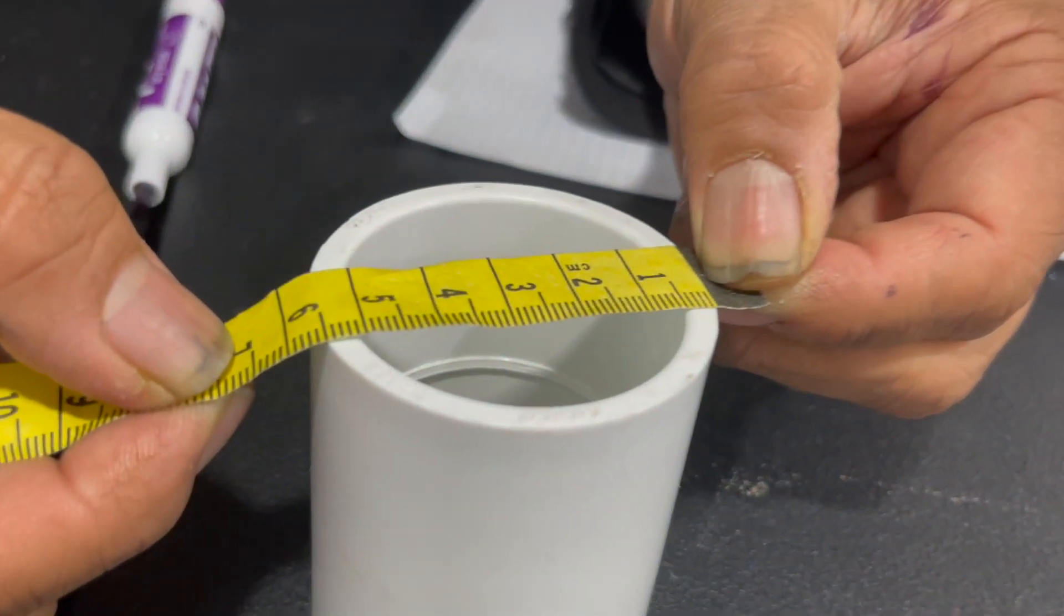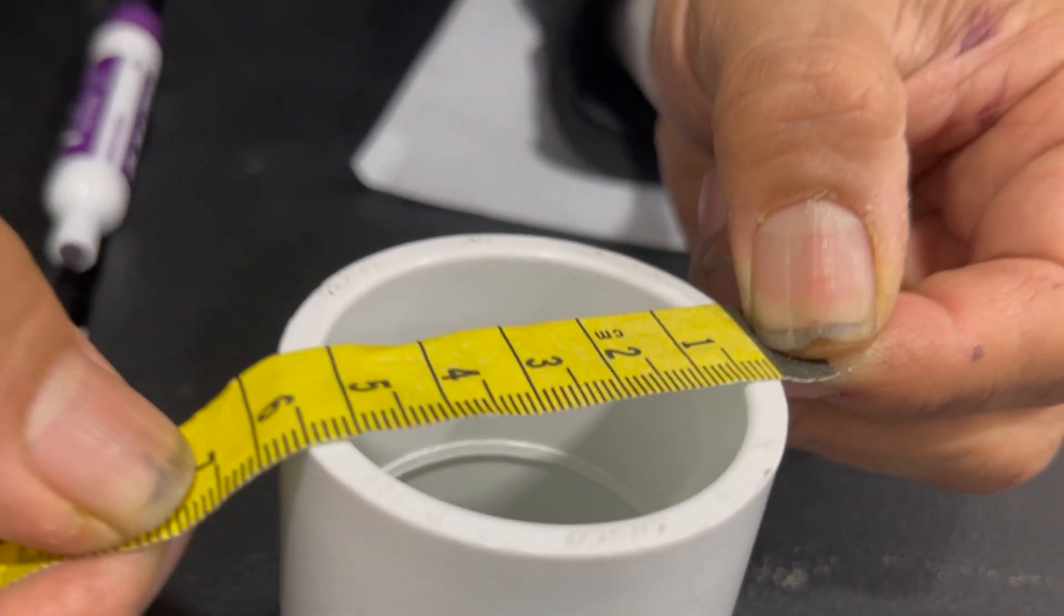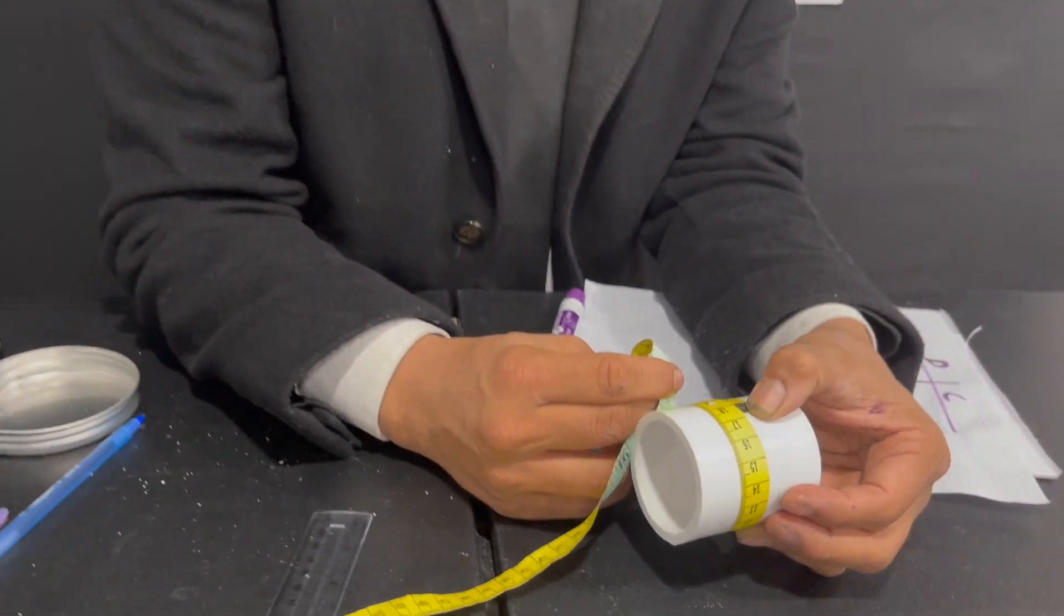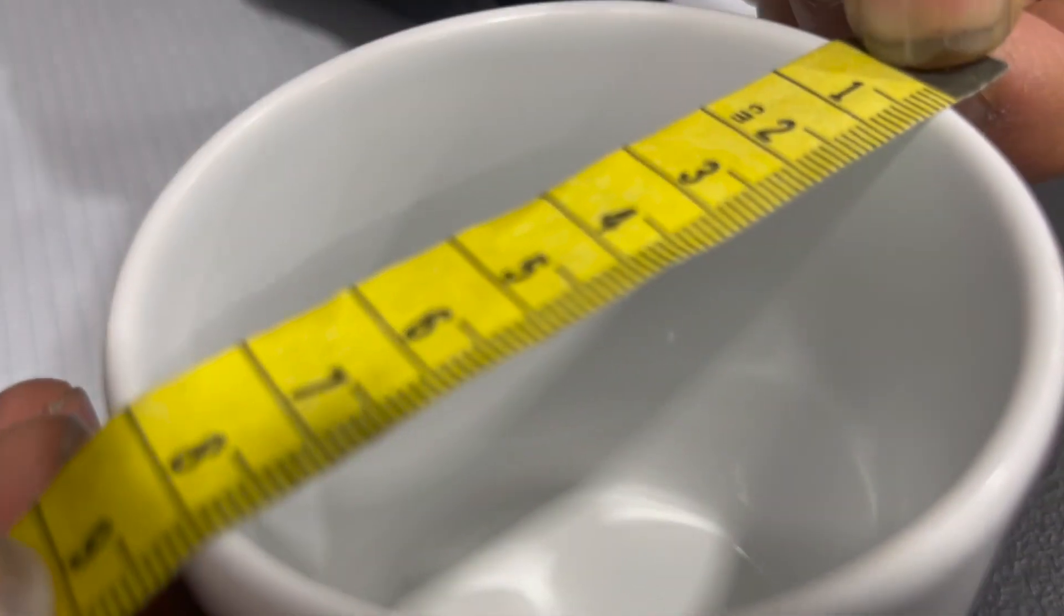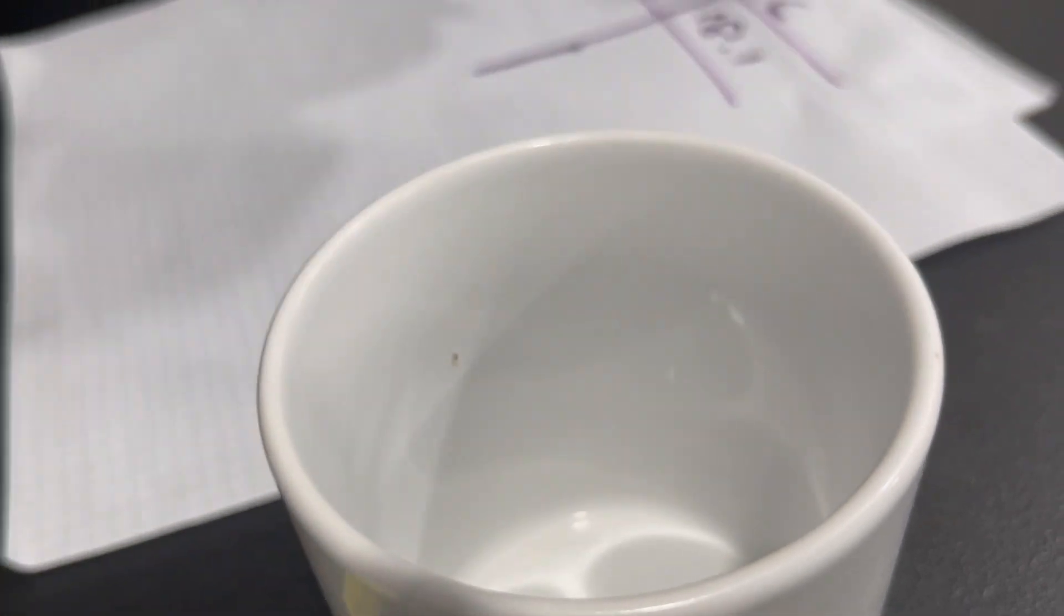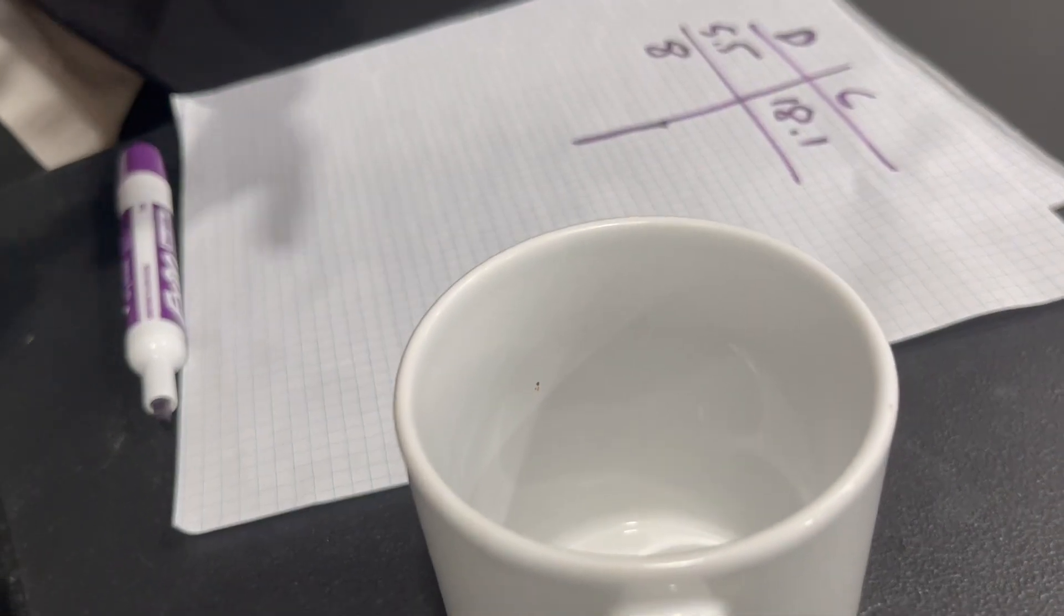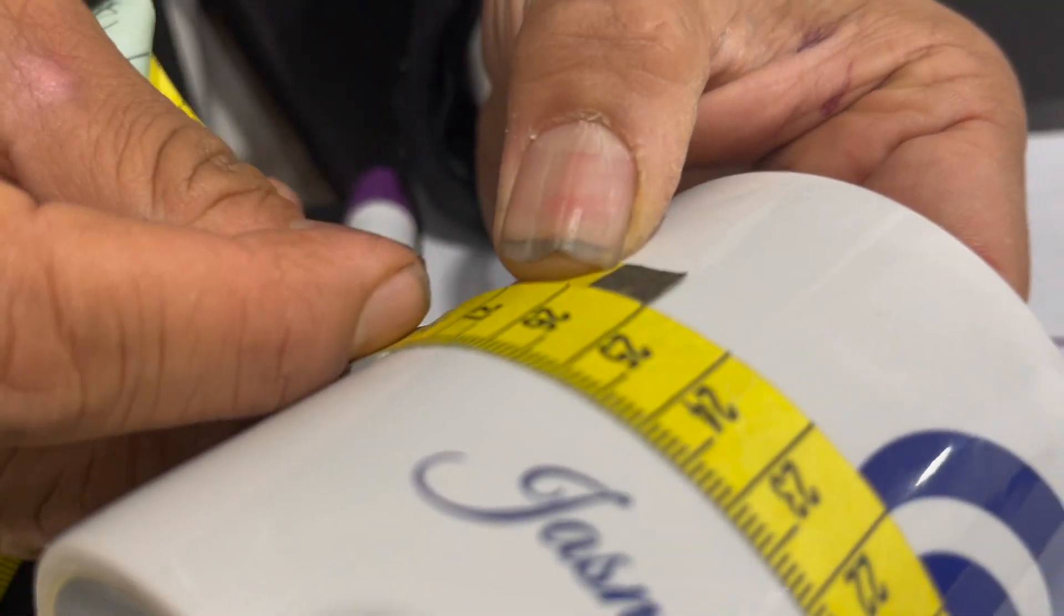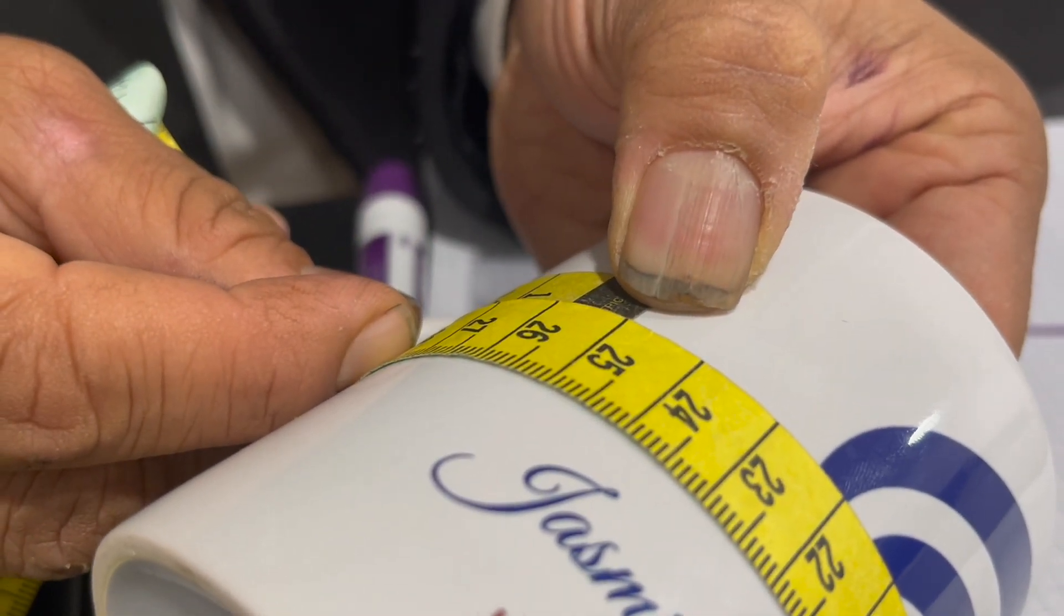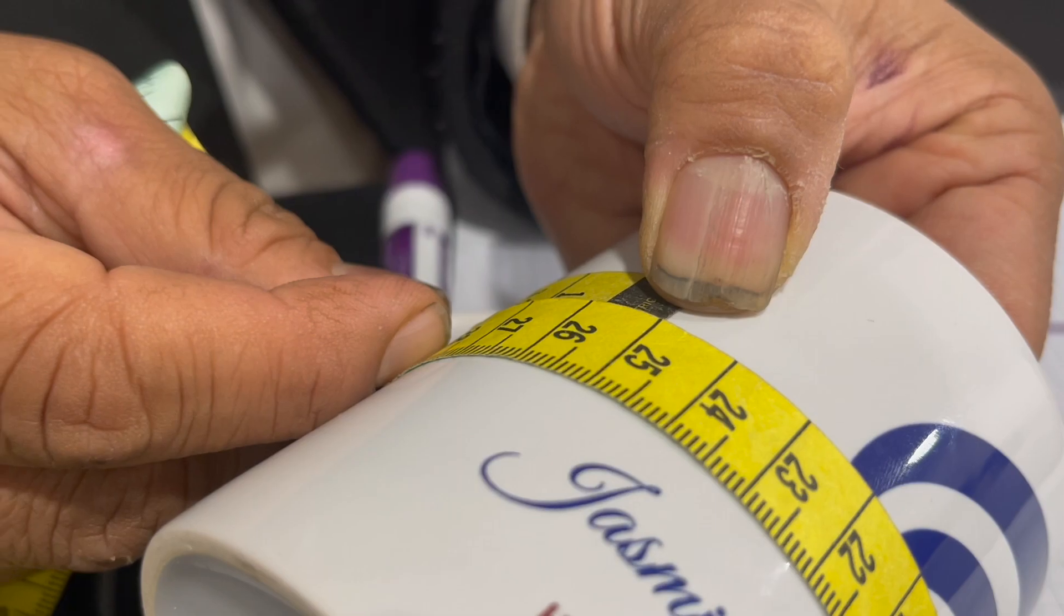I would say 5.5 centimeter. So 18.1 centimeter. Diameter would be coffee mug. Diameter is exactly 8. So circumference, hopefully we'll get a whole number. 9 or 25.8. So I'm going to write 25.8.